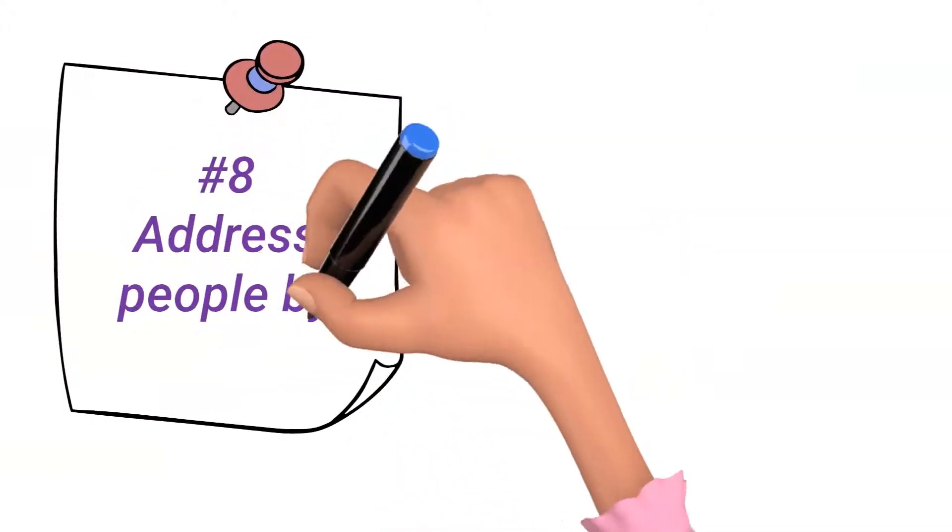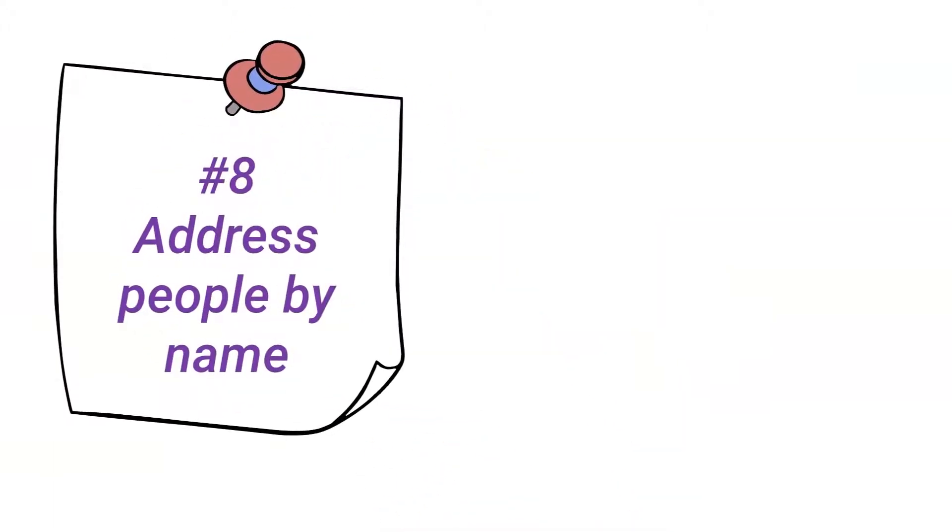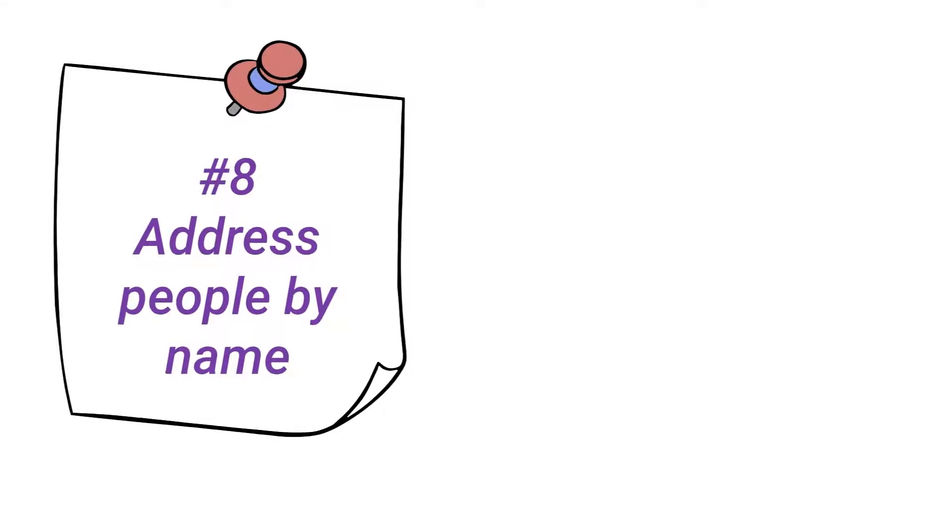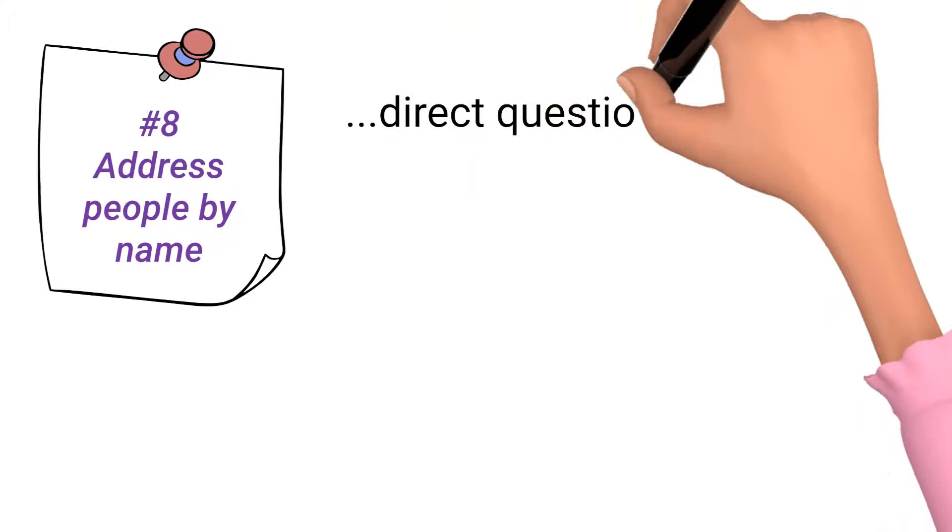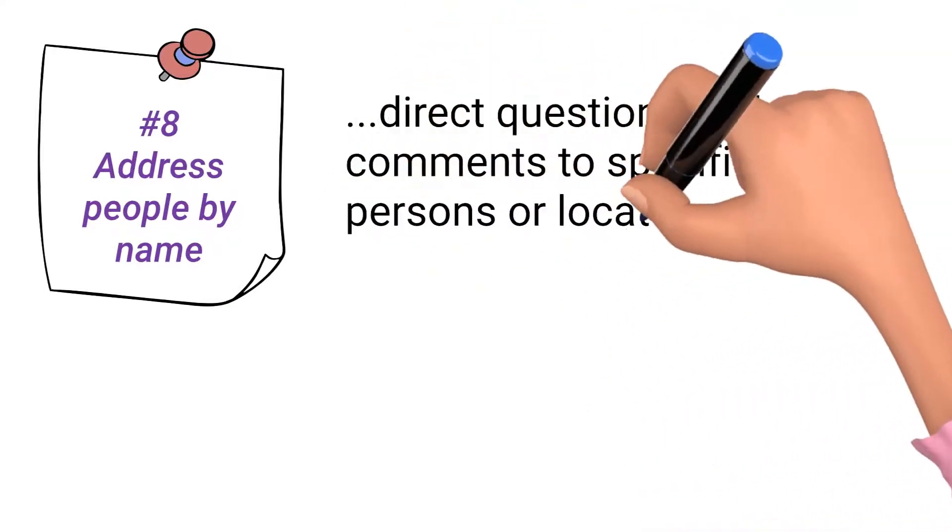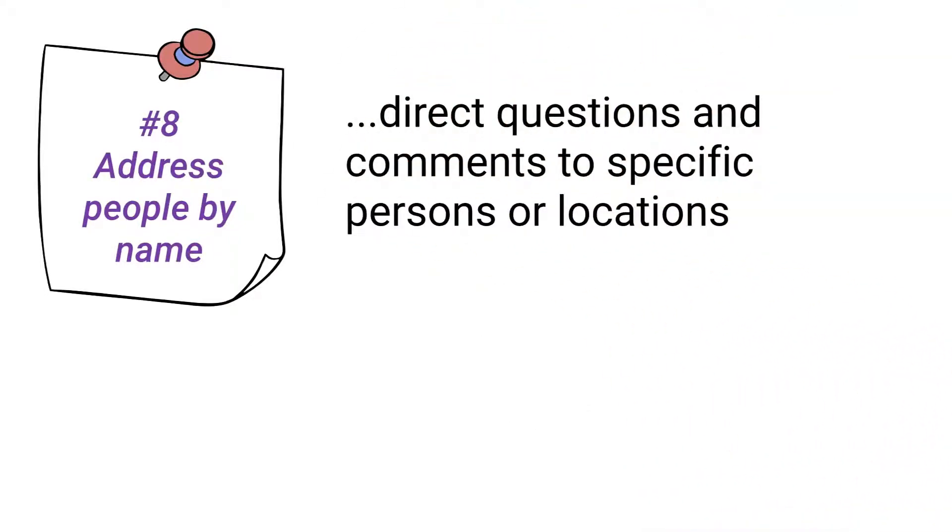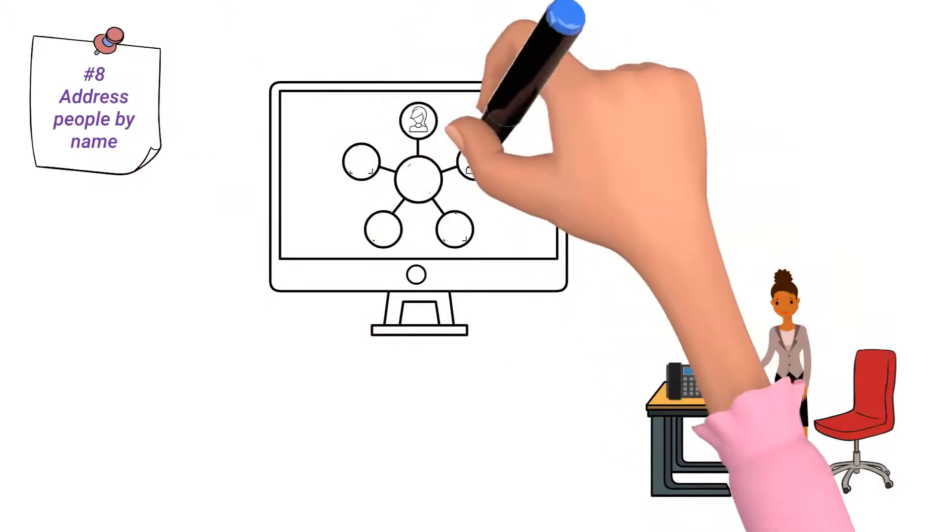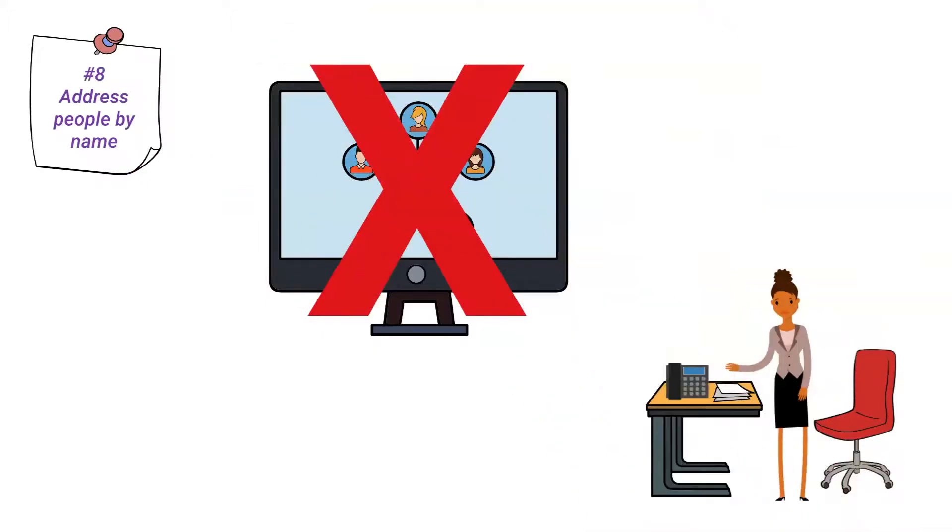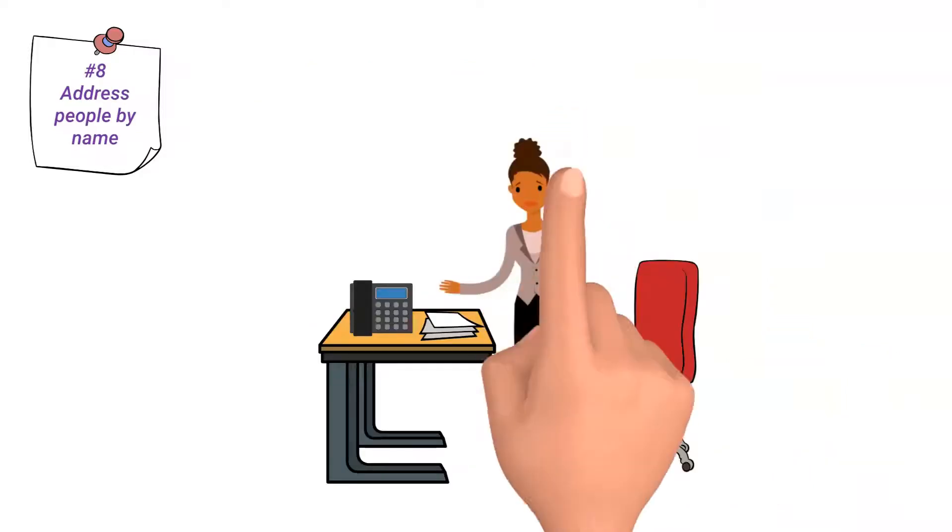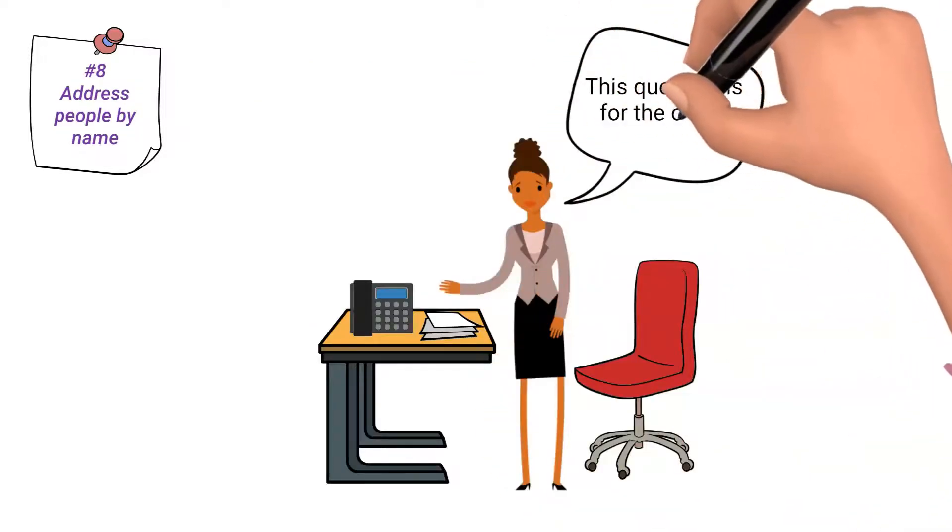Number 8. Address people by name when speaking specifically to them. One conference call meeting etiquette rule that is not consistently used is directing questions and comments to specific persons or locations. Conference call meetings lack a very important factor, there is no visual communication. Therefore, it will make others aware your communication is directed at them and prevent confusion when responding.